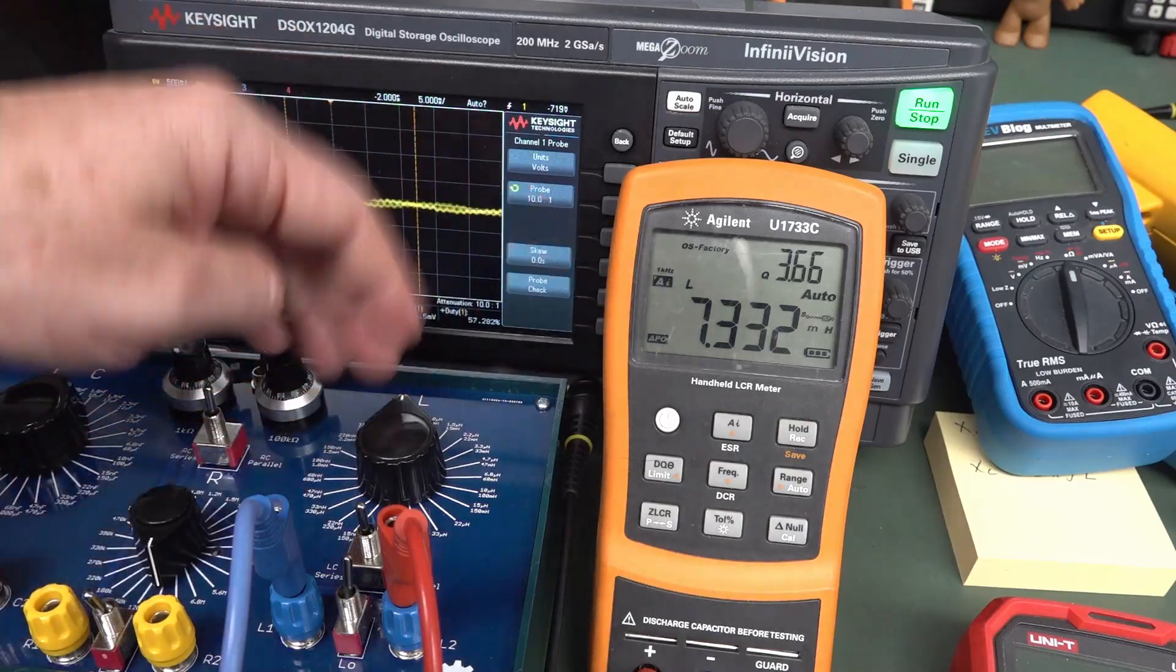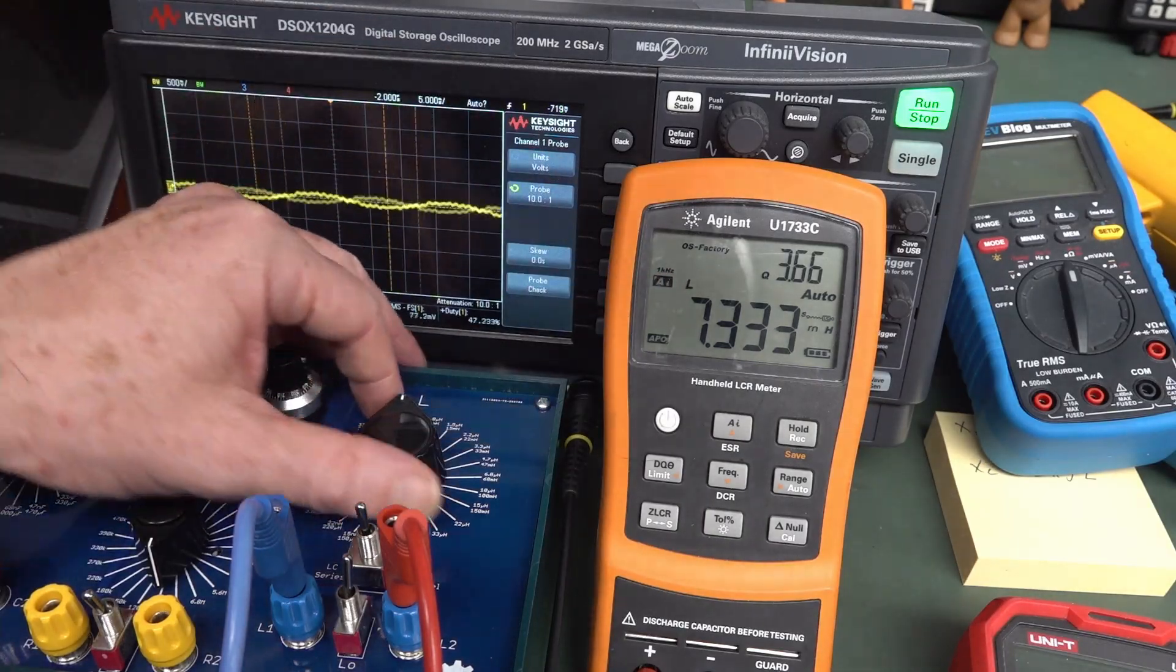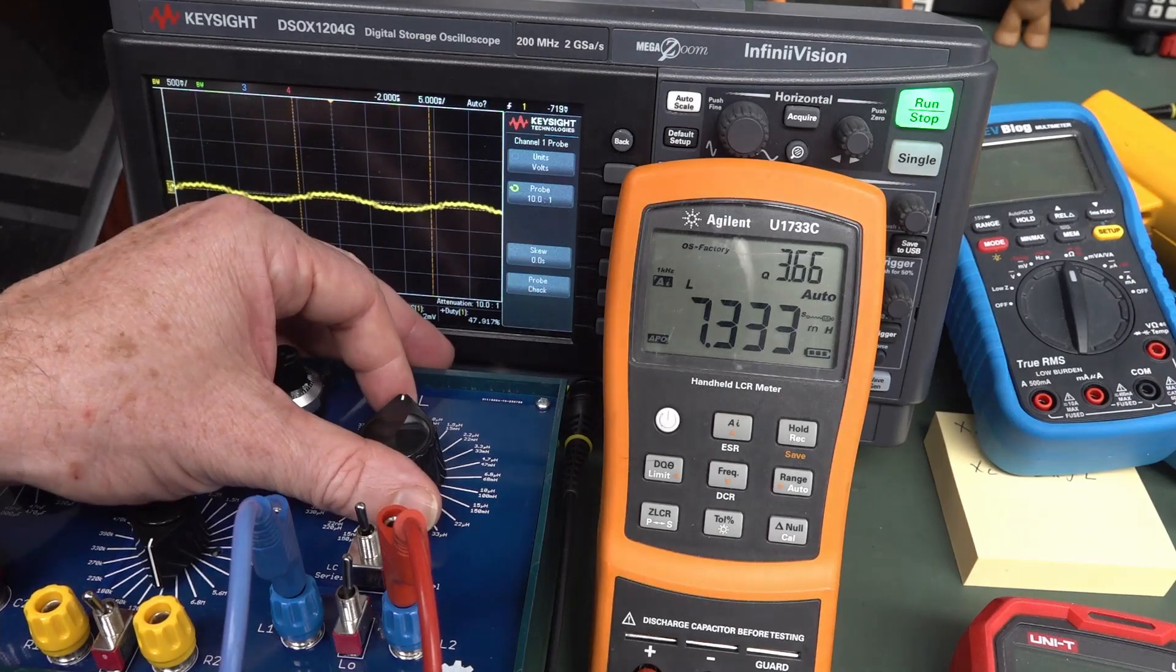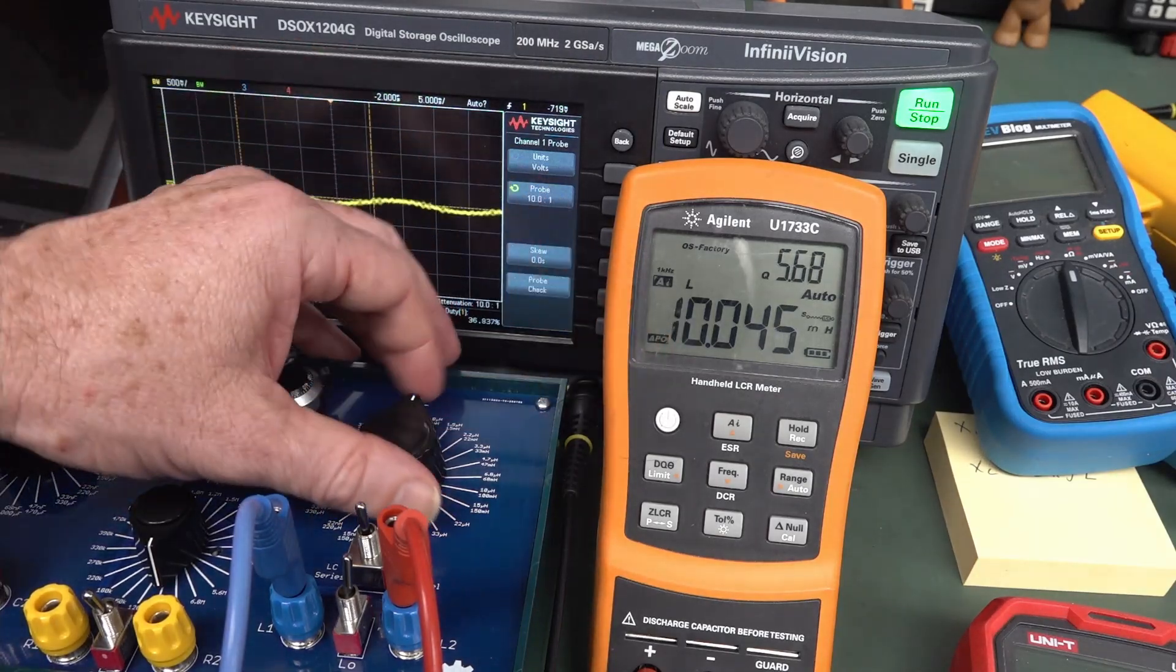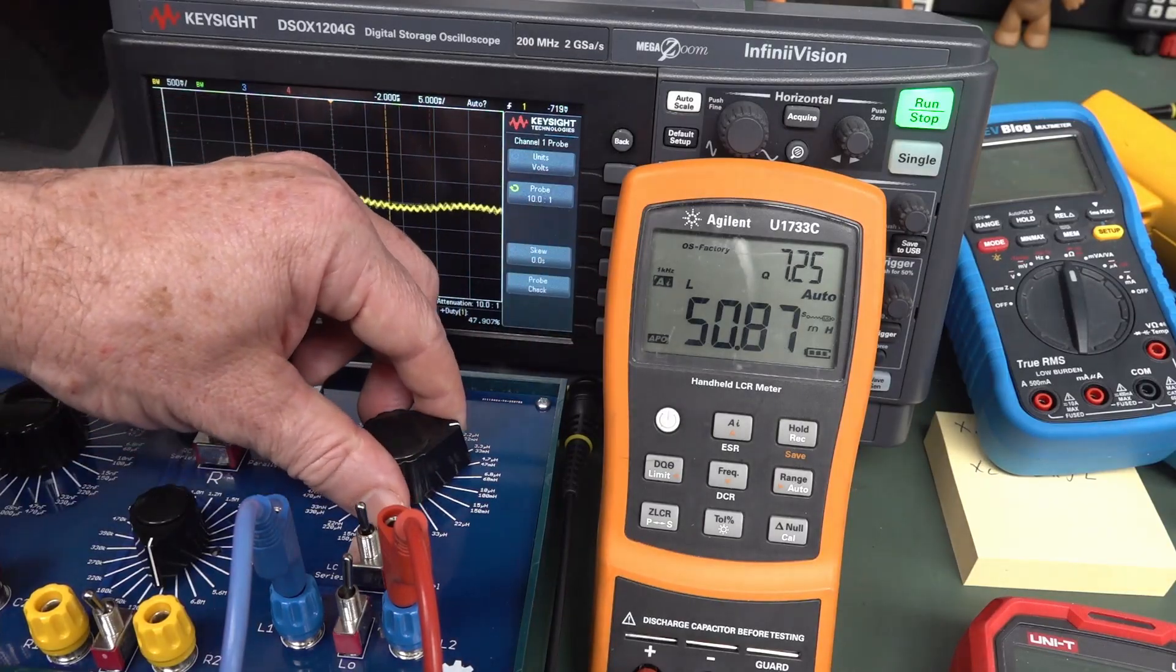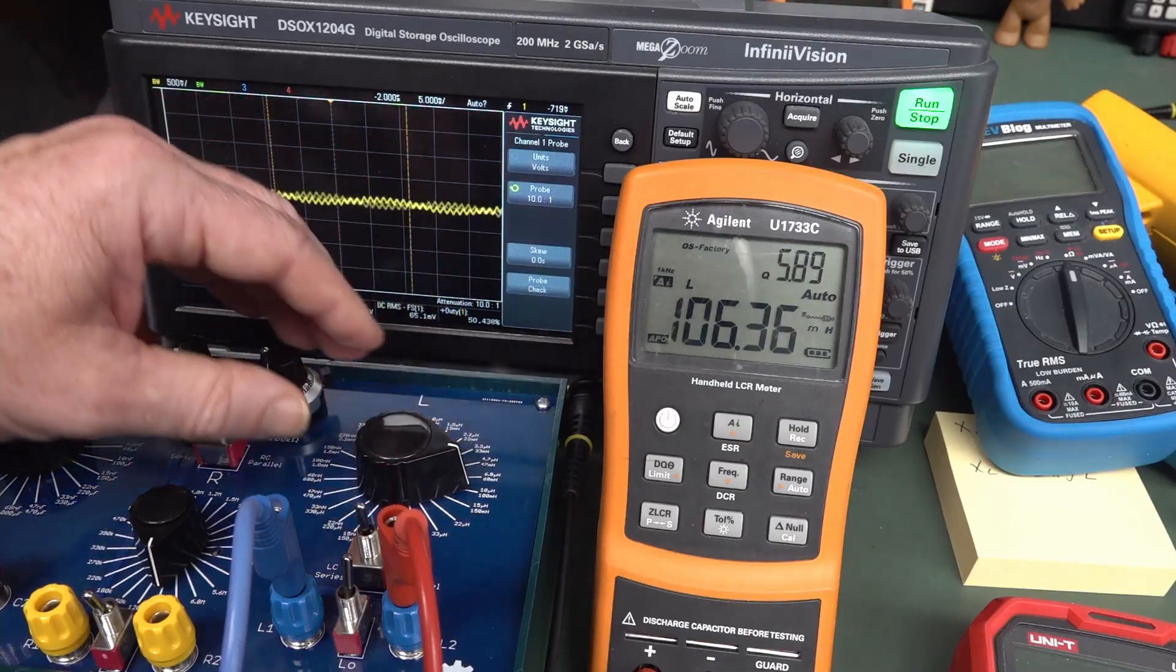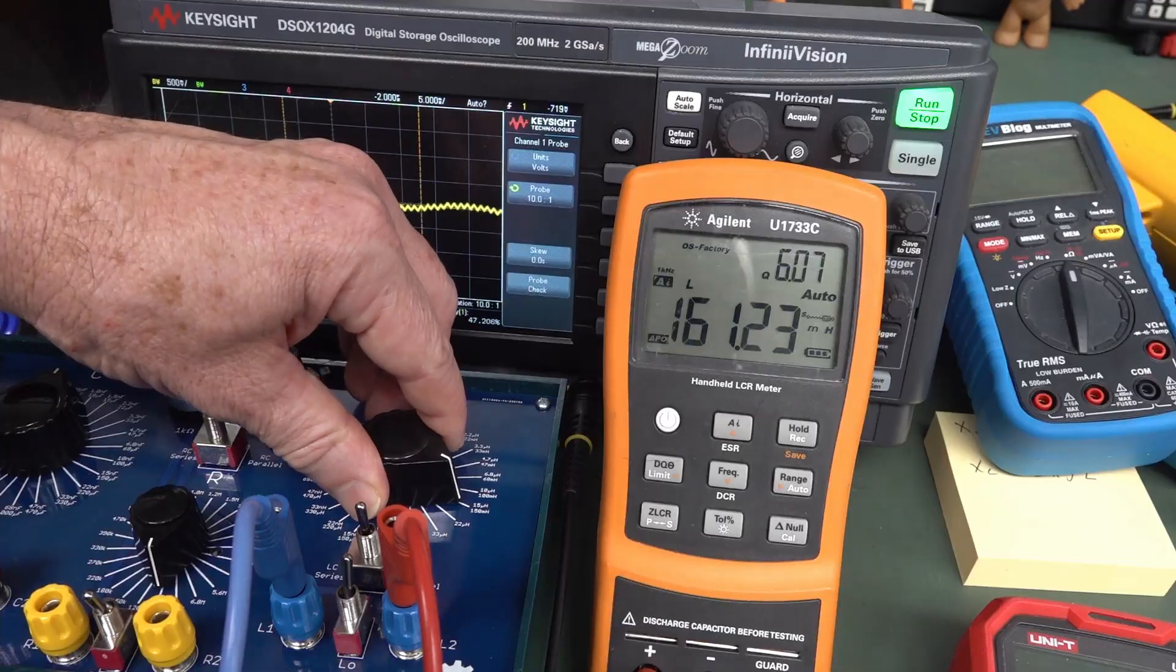And if we compare the actual values here with the proper LCR meter, I'm measuring it at 1 kilohertz here. The 6.8 millihenry is actually 7.3. And the 10 millihenry is actually pretty close to bang on 10. And 47 milli is 50.8. So there's some errors in there. But there you go. 106.